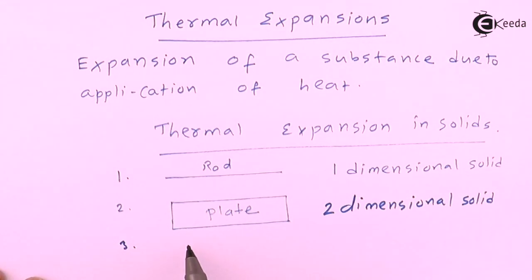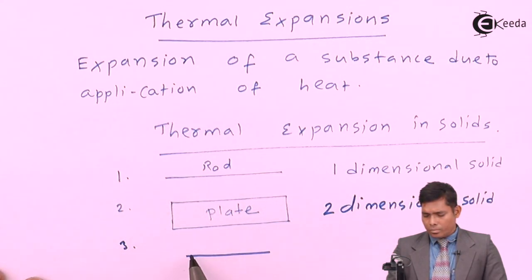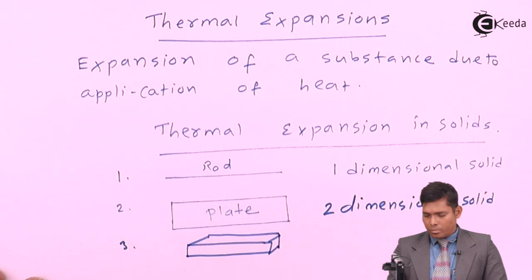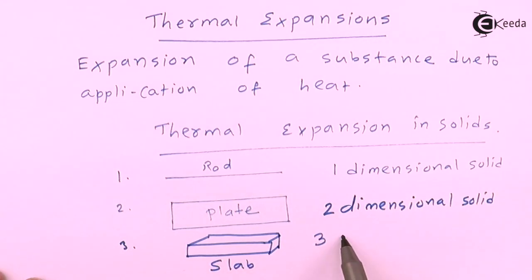Third type is, suppose it is a slab, it is a three dimensional solid. So basically, we have three types of solids, which is a linear, expressed in one dimension.